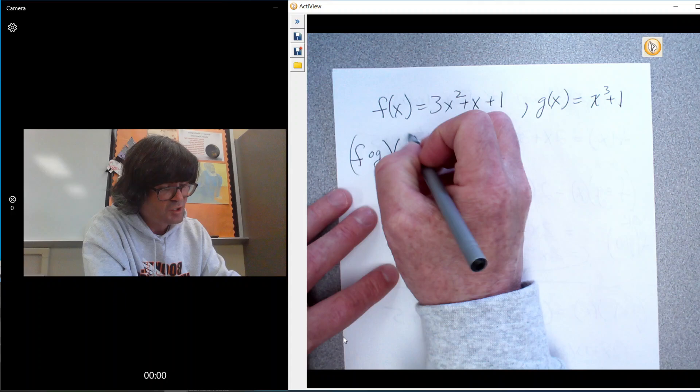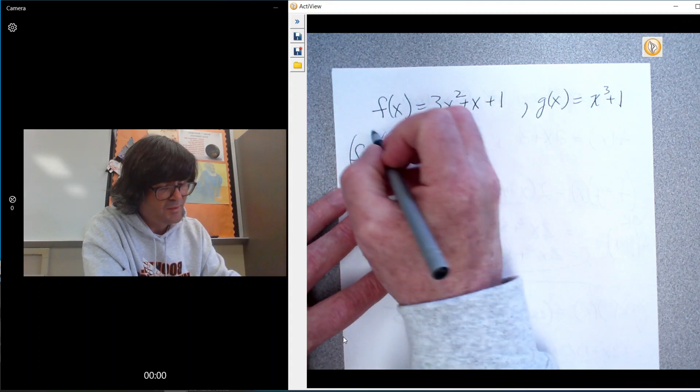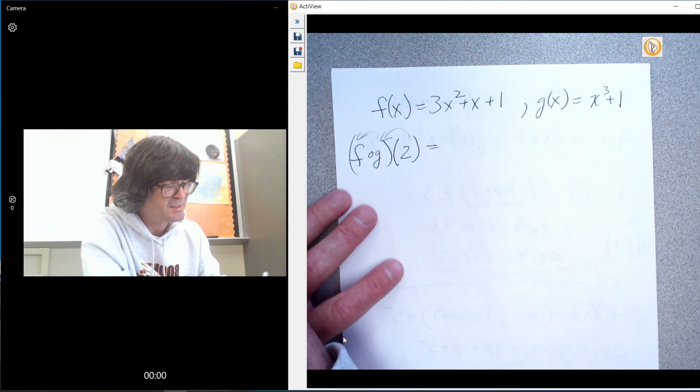Another option, another way to do the same thing is put 2 into g and then put that into f. You always work from the right to the left. I'll do it both ways so you can see how this pans out.